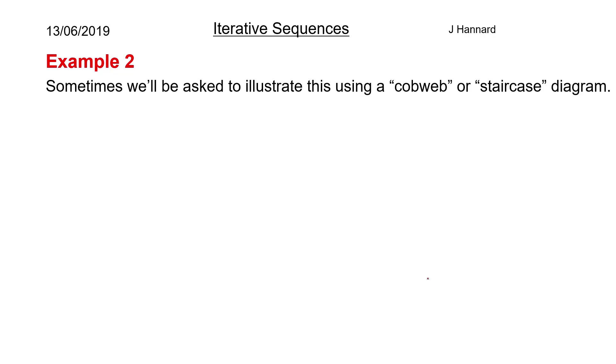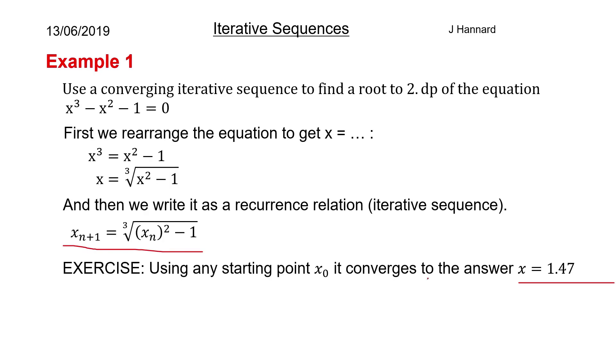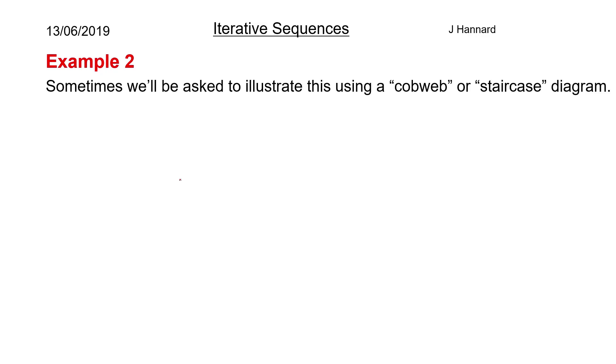But example two, sometimes we'll be asked to illustrate something called a cobweb or staircase diagram to sort of visualize this iterative sequence thing. And I sort of get it, but again, I don't know. I've seen no examples of cobweb diagrams, just staircase. So in this case, I'm going to put the image from the book in on this video. So to do this, we set y equal to both the left-hand side and right-hand side of the equation that we made. So we had this equation here.